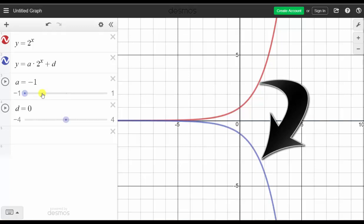This should make sense because for the same x values, now the y values or function values are going to be opposites.